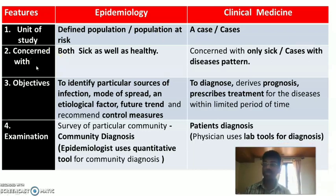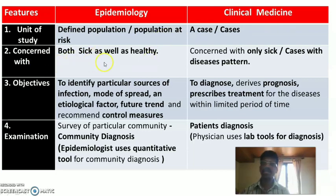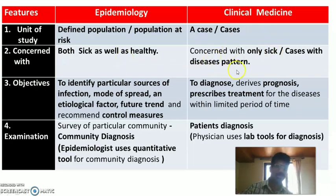The second difference is what each field is concerned with. Epidemiology is concerned with both sick as well as healthy people, since the defined population includes everyone. Whereas clinical medicine is concerned only with sick people — caring for and treating cases with a disease pattern.